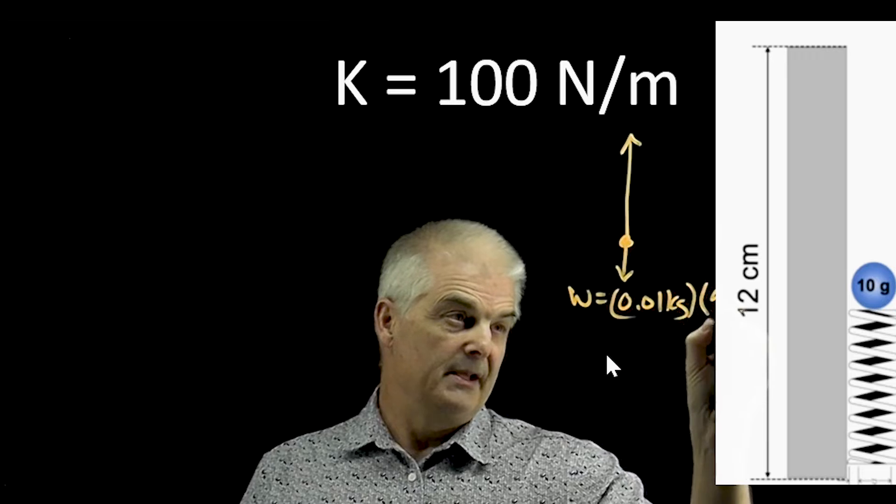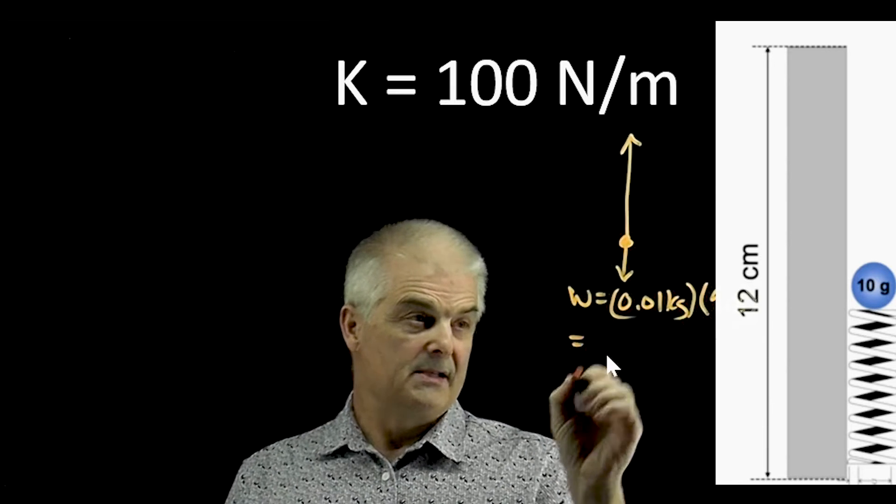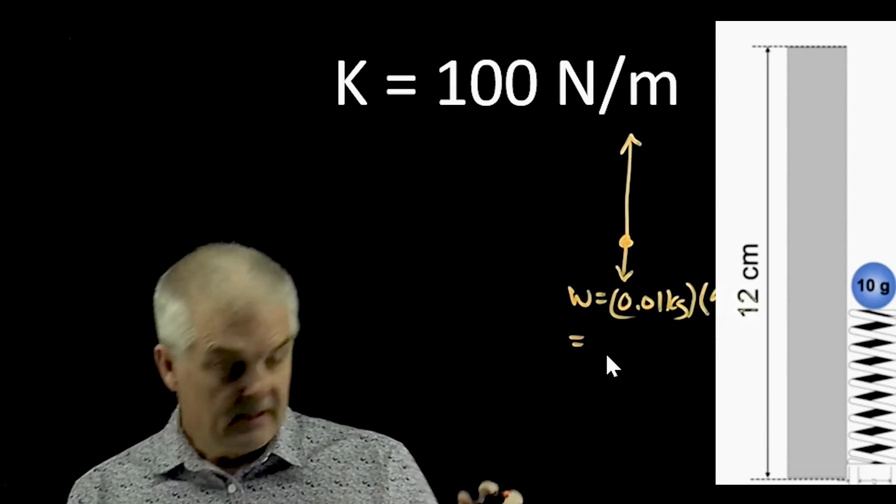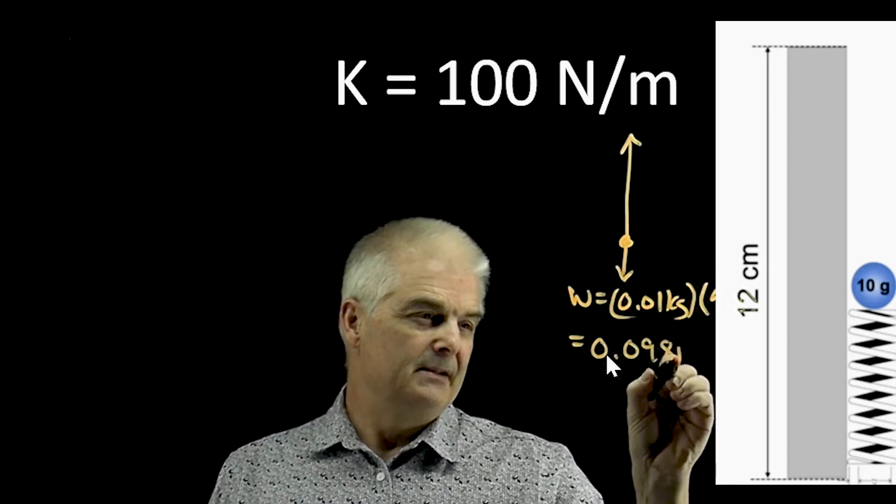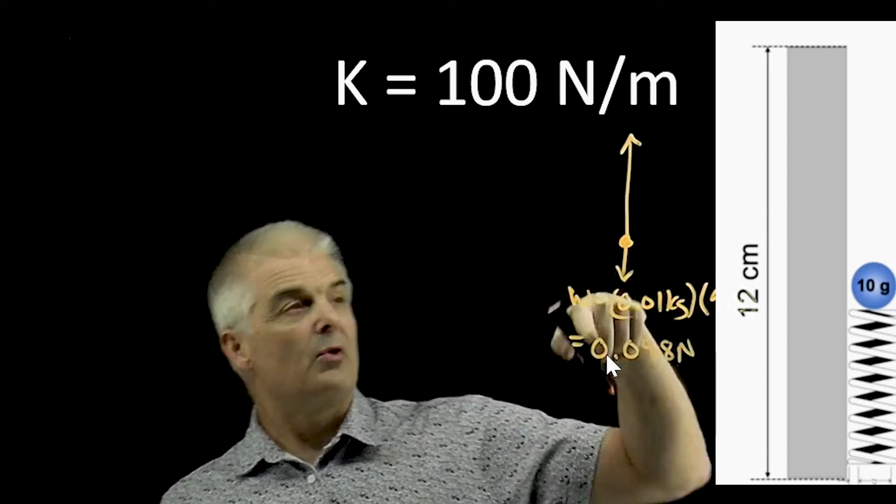and its weight is going to equal, now 10 grams is 10 divided by 1,000 is 0.01 kilograms times 9.8. So the weight is going to be 0.098, that's important,